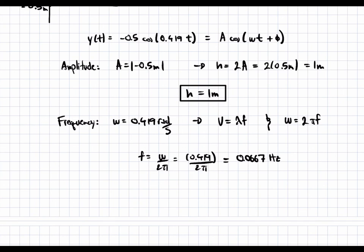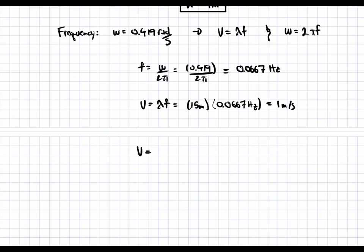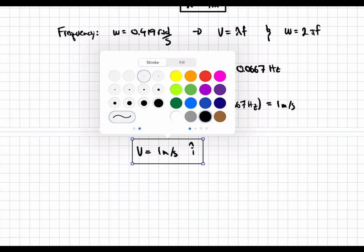And we can plug this into the v equals lambda f equation, where v is going to be equal to 15 meters times the frequency 0.0667 hertz. And this is equal to 1 meter per second. So we know that the velocity of the wave is 1 meter per second in the i-hat direction because it's pointing towards the right. This is the second part of the question.